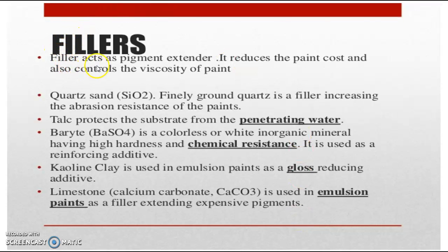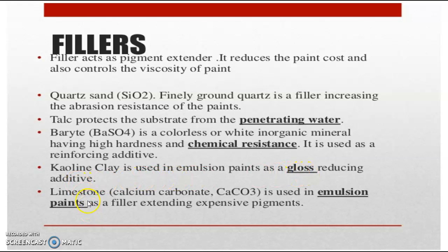Next, we have fillers. Fillers act as pigment extenders — they fill the pigments in the paint, reduce the paint cost, and also control the viscosity slightly. Quartz sand (silicon dioxide), finely ground, is a filler that increases the abrasion resistance of the paint. Talc protects the substrate from penetrating water — it is water repellent. Barite (BaSO4) is a colorless or white inorganic mineral with high hardness and chemical resistance, used as a reinforcing additive. Kaolin clay is used in emulsion paints as a gloss-reducing additive. Limestone (calcium carbonate, CaCO3) is used in emulsion paints as a filler extending the pigments.